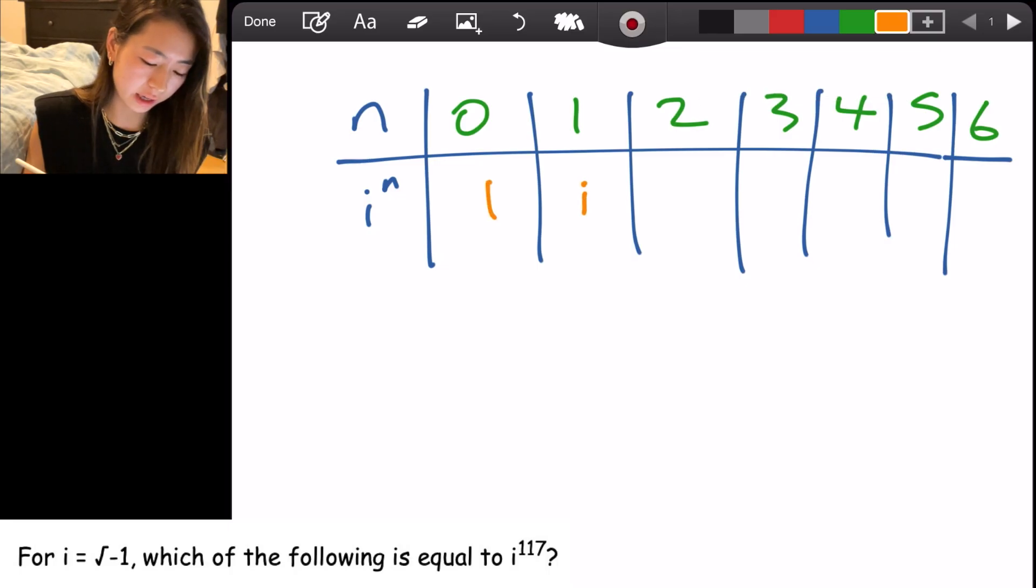i squared is, you tell me, minus 1. Then to the third power, you just do negative 1 times i, which is negative i.